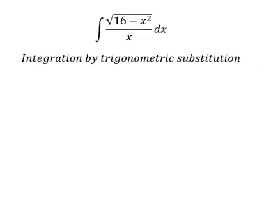So we need to put x equal to 4 sine t. So if we put this one in here, you get 16 minus 4 sine t squared.